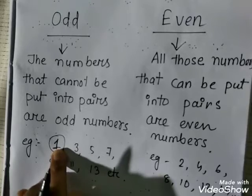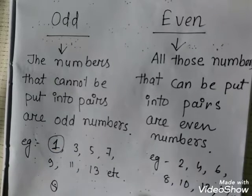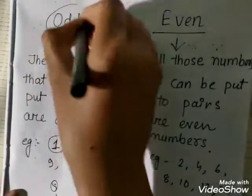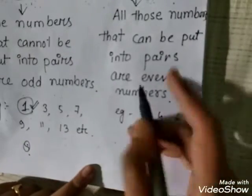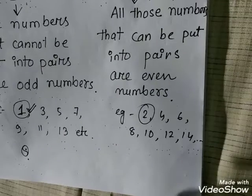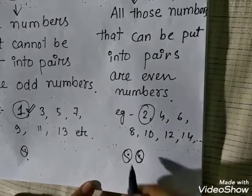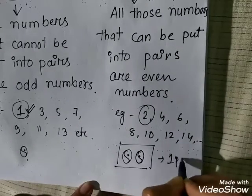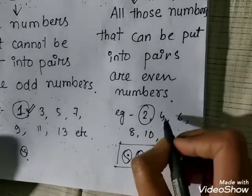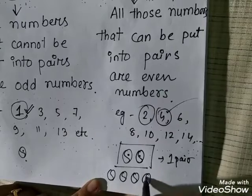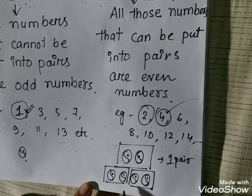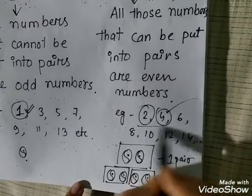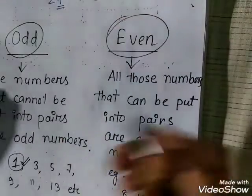Let me show you with a ball analogy. Consider one ball — this ball cannot be paired because there is no other ball, so it is alone. That is why 1 is an odd number. Now consider two balls — yes, they can form one pair, so 2 is an even number. Now take four balls: I can pair them two and two, making two pairs, so 4 is also an even number.